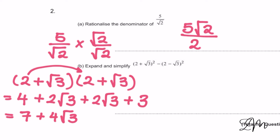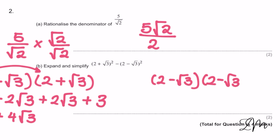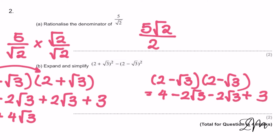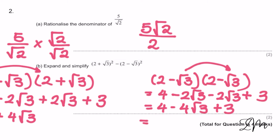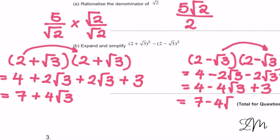Then we've got (2 − √3)(2 − √3). So we get 4, and here we've got minus instead of pluses, so we get 4 minus 2√3, minus 2√3, plus 3 — again because minus times minus makes a plus. So we get 4 minus 4√3 plus 3, which is 7 minus 4√3.